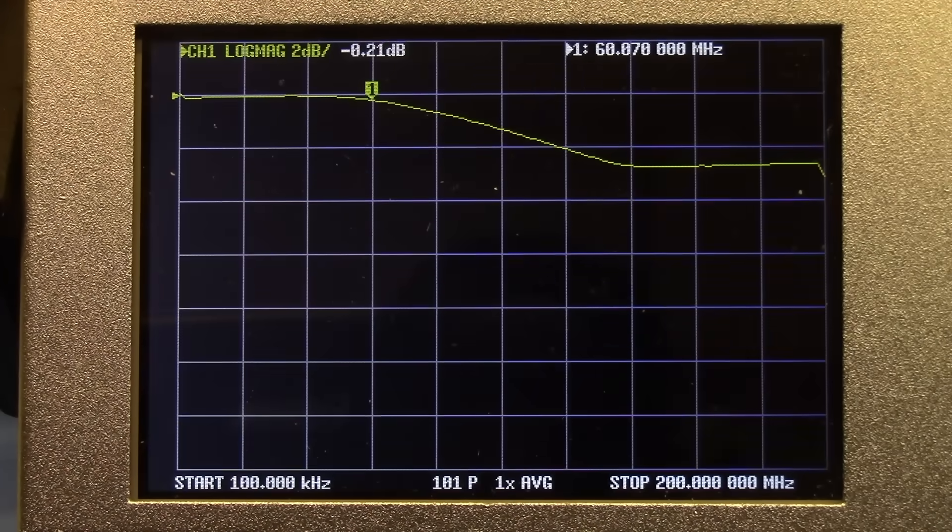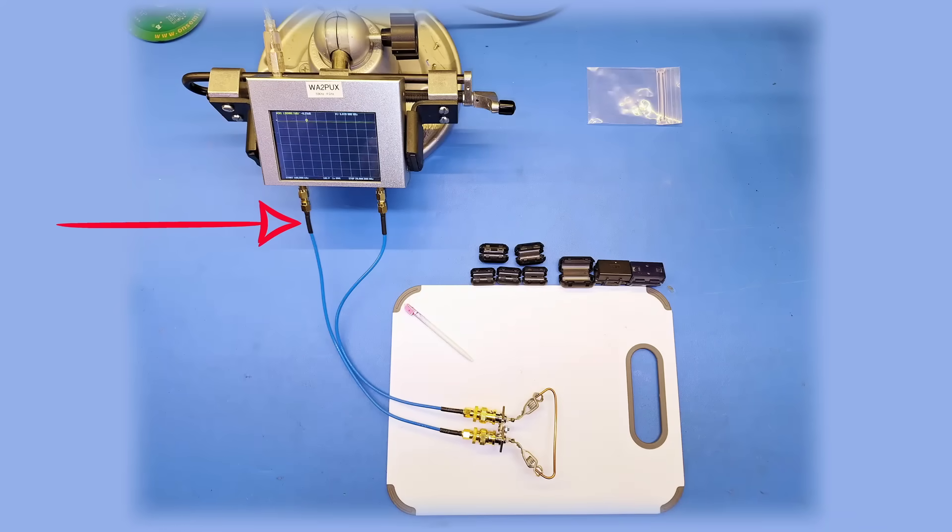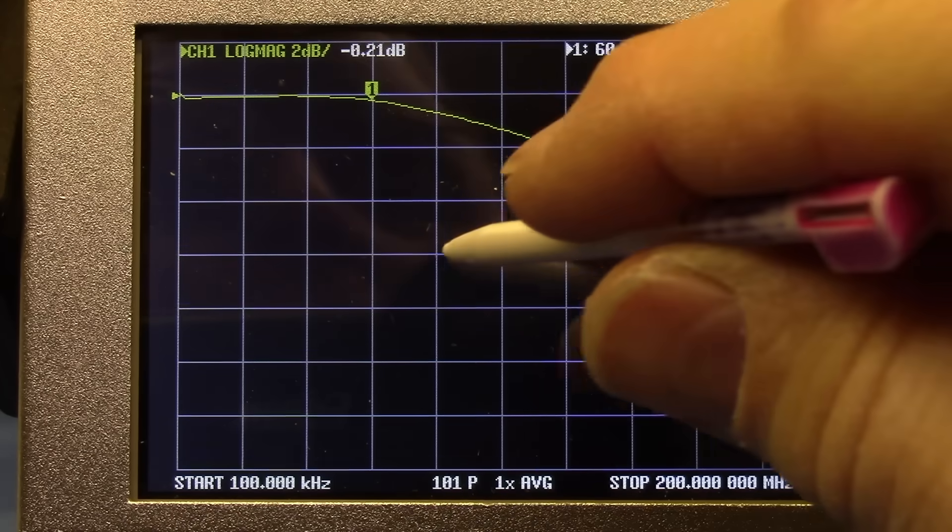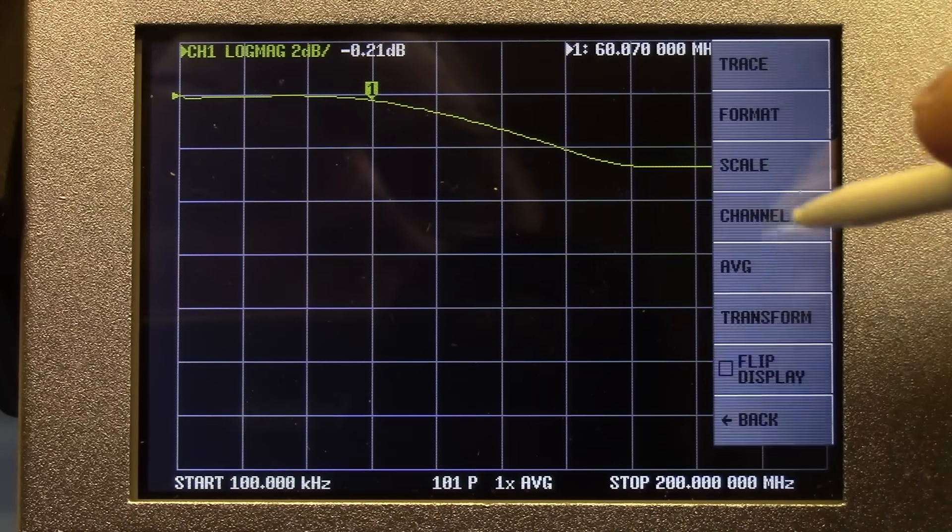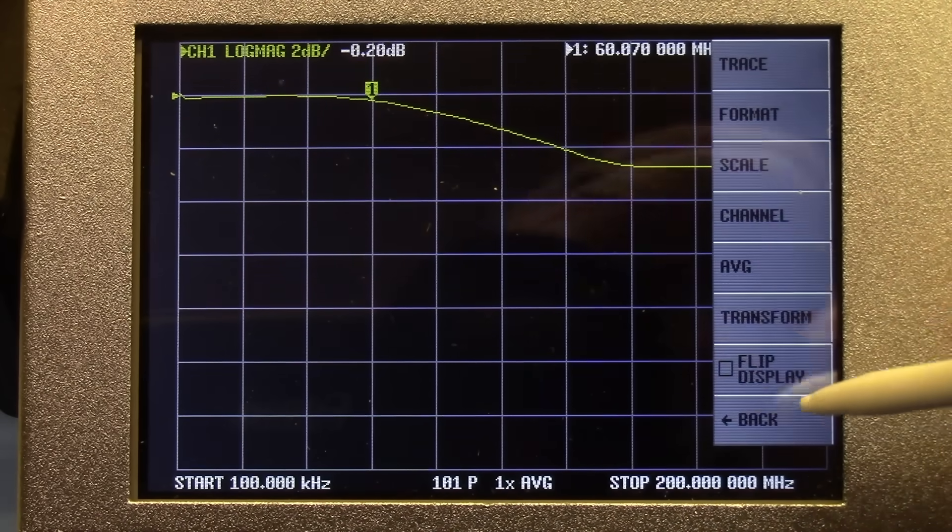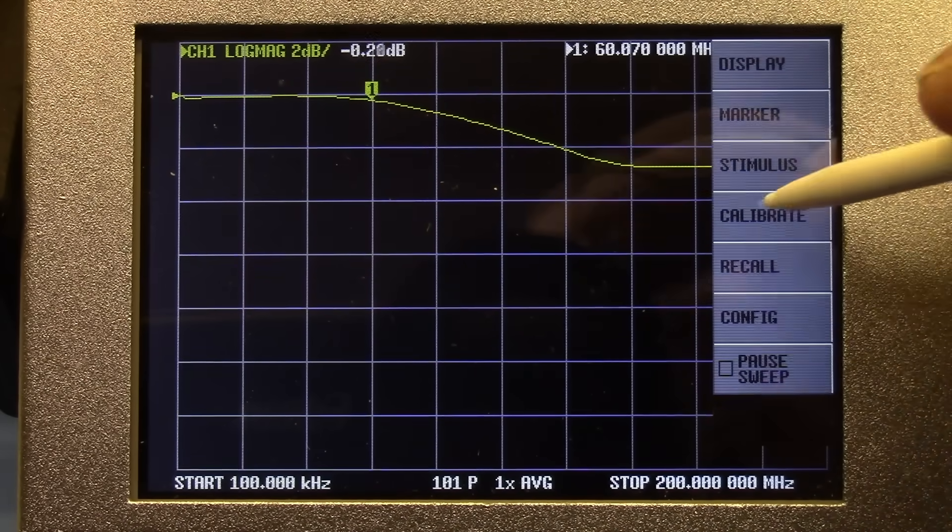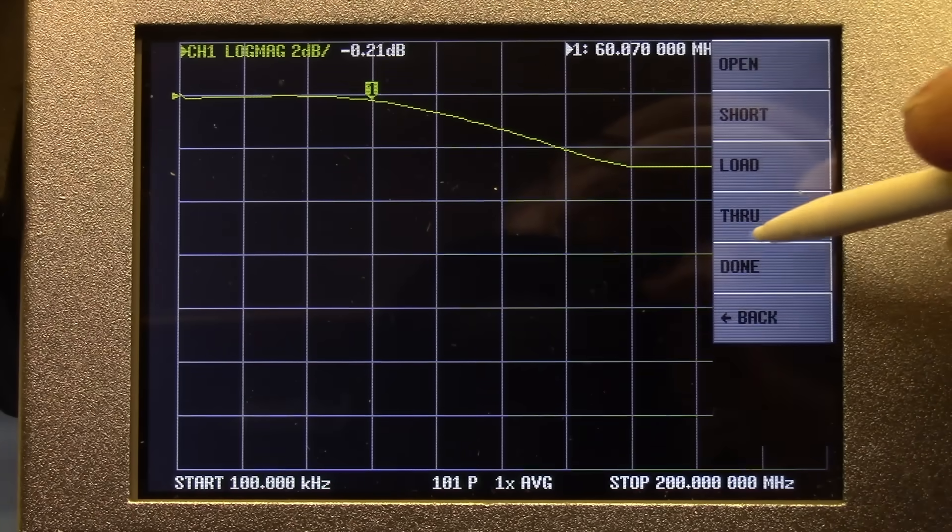To get ready for calibration, I connect port 1, or port 0 on the nano VNA, to one connector of my fixture, and port 2, which is port 1 on the nano VNA, to the other connector of my test fixture, as seen here. We are going to calibrate for a through measurement. So now I get to calibrate. I'm going to calibrate through and click done.